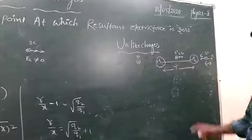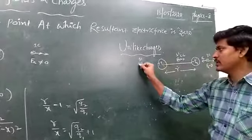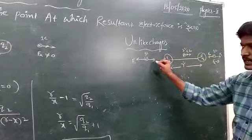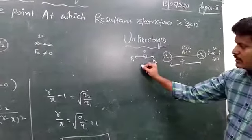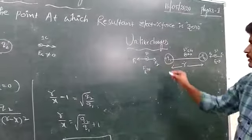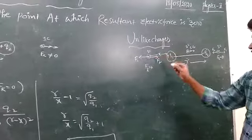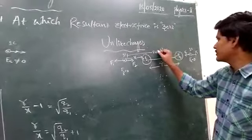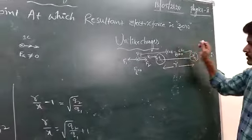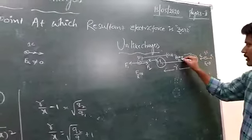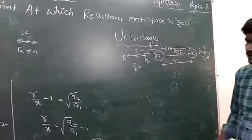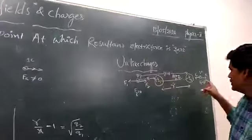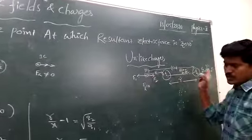So F1 equals F2, meaning the resultant force is zero at that outside point. The null point is located at distance X from Q1 and at distance R plus X from Q2. The force experienced by the test charge — resultant force — is zero at these two outside points. These two outside points are said to be the null points.